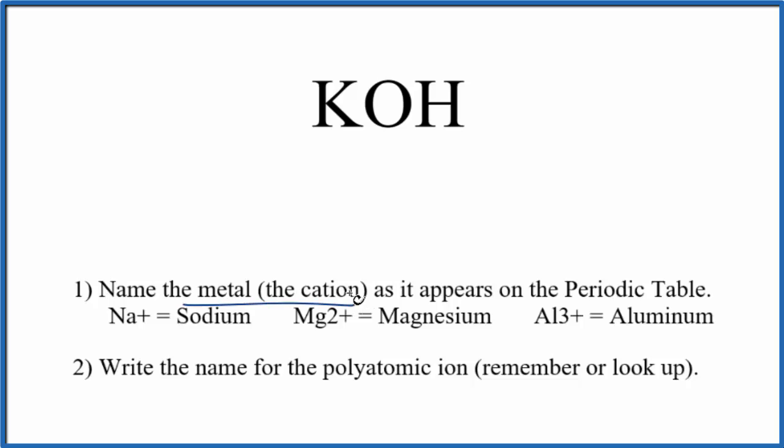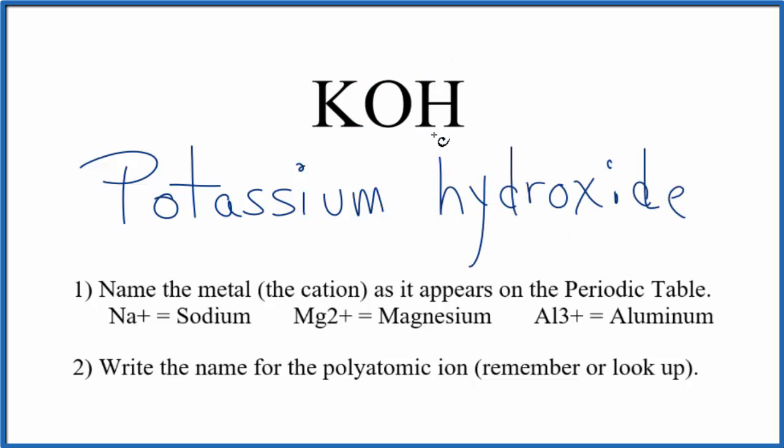First, we write the name for the metal. So K, that's potassium. Then we write the name for the polyatomic ion. That's the hydroxide ion. So the name for KOH is potassium hydroxide.